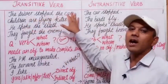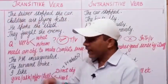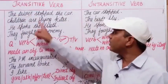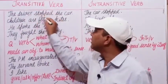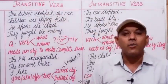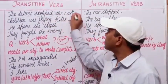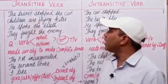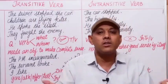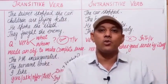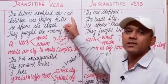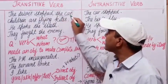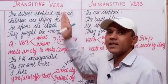For example: 'The driver stopped the car.' Here the driver is the subject — the doer of action. What did the driver stop? The car — that is the object. The driver stopped what? We need an object to complete the sense of this sentence. 'The driver stopped the car' — we need this object to complete the sense.